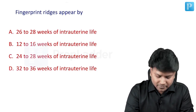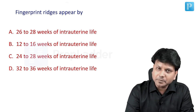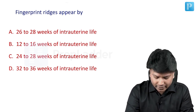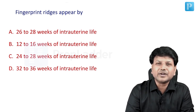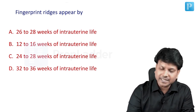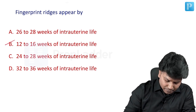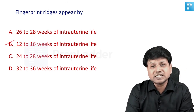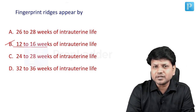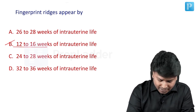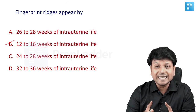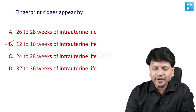The first question: fingerprint ridges start appearing by — options are 26 to 28 weeks, 12 to 16 weeks, 24 to 28 weeks, or 32 to 36 weeks. This is a straight factual question. The answer is 12 to 16 weeks of intrauterine life. It starts appearing by 12 to 16 weeks and gets completed by around 24 weeks.